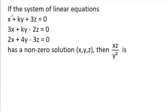In this video, we have given that if the system of linear equations x plus ky plus 3z equals 0, 3x plus ky minus 2z equals 0, and 2x plus 4y minus 3z equals 0 has a non-zero solution (x, y, z), then we have to find the value of xz by y squared.